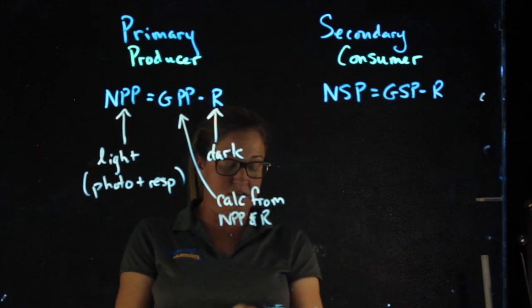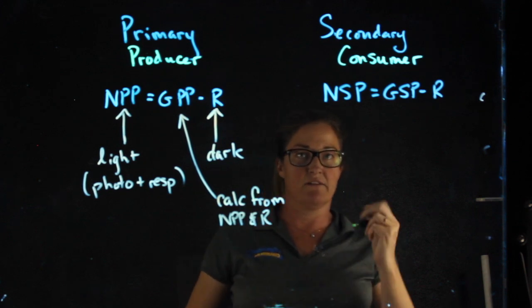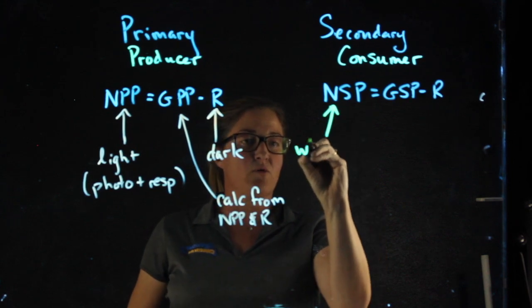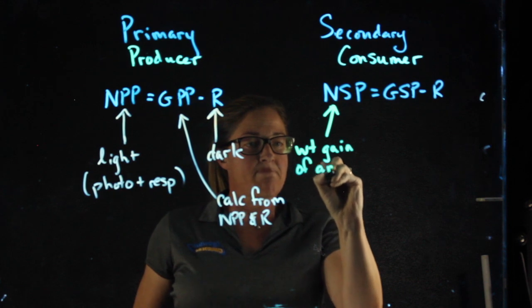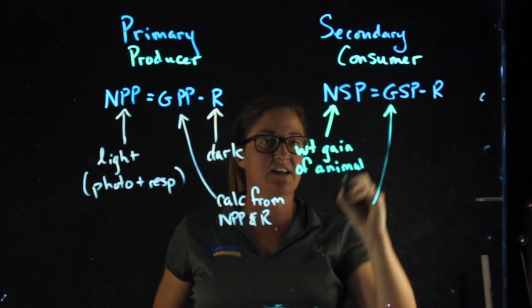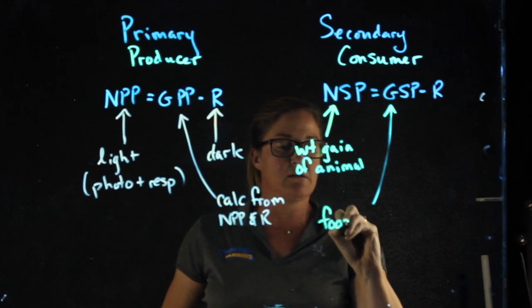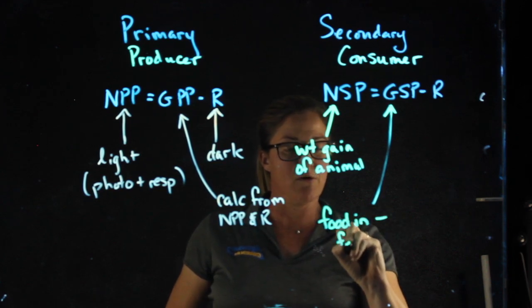In contrast, over here, respiration is always going to be calculated from the others. Net secondary productivity is based on the weight gain of the animal. Gross secondary productivity is based on how much stuff he took in minus his feces, so food in minus feces out.